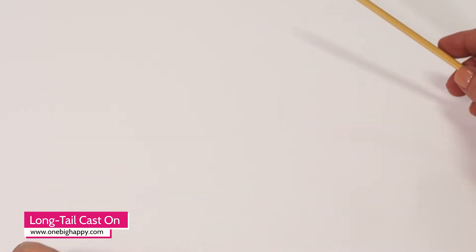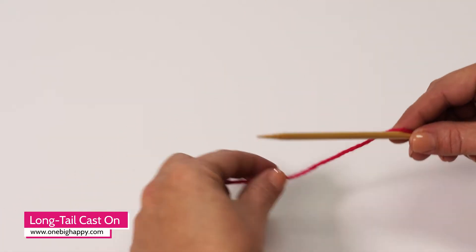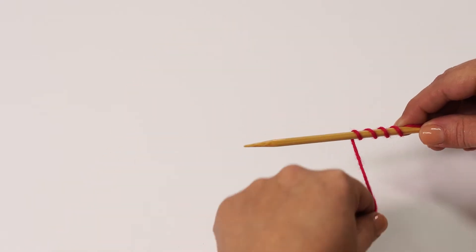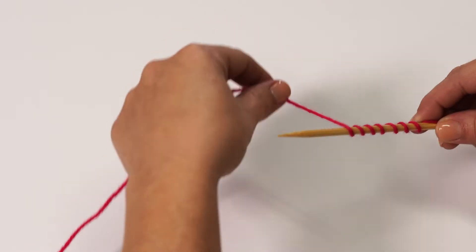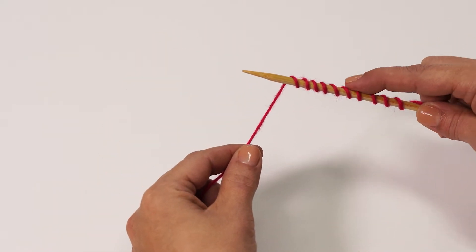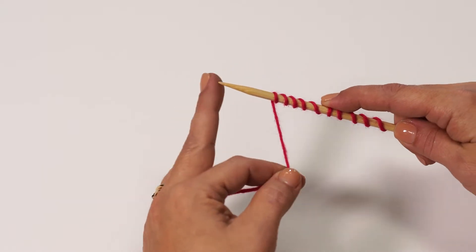How long should you leave your tail? To find out, wrap the tail end of your yarn around the needle as many times as there are stitches to cast on. So to cast on 10 stitches, I'll wrap it up 10 times. Add a little more length for safety.